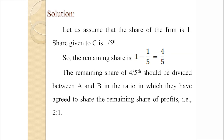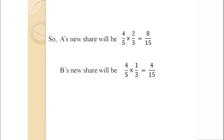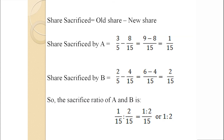The total share of the firm is 1 and the share given to C is 1/5. So the remaining share is 1 − 1/5 = 4/5. This 4/5 should be divided between A and B in the ratio 2:1. So A's new share is 4/5 × 2/3 = 8/15, and B's new share is 4/5 × 1/3 = 4/15. Next, we calculate the share sacrificed by each old partner (old share − new share). Share sacrificed by A: 3/5 − 8/15 = 1/15. Share sacrificed by B: 2/5 − 4/15 = 2/15.